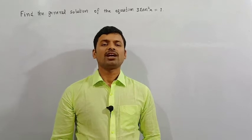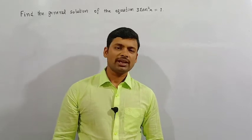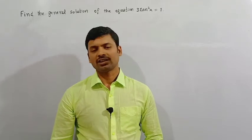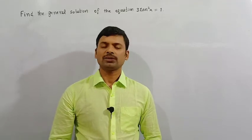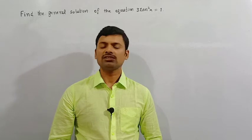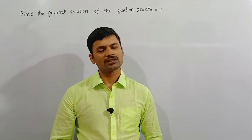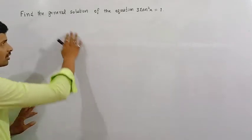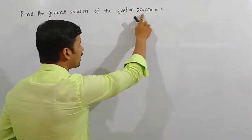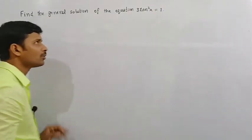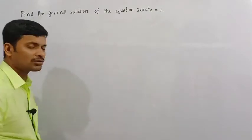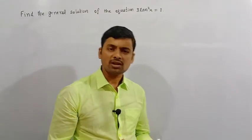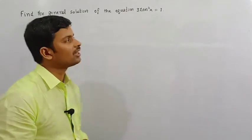Hello everyone. Today I am going to explain one problem and their solution as well. This problem is related to the topic of general solution of trigonometric equations. The question says: find the general solution of the equation 3 tan squared x is equal to 1. Let's learn how we can obtain the general solution of such equations.